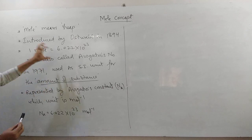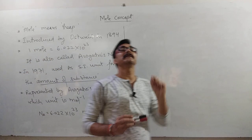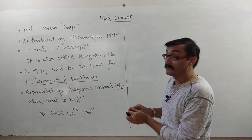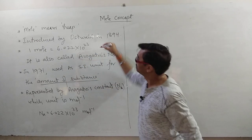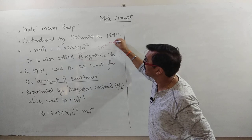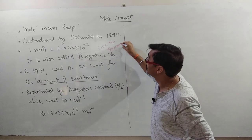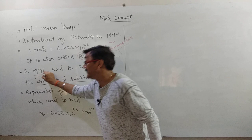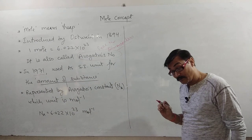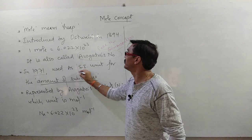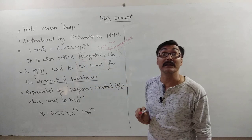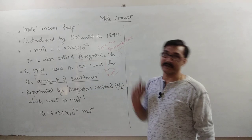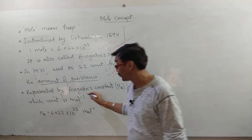It is just a number like a dozen — a very large number. Avogadro's number is a pure number, meaning it is dimensionless. In 1971, it was first approved as an SI unit. The SI unit for amount of substance is the mole, and it is also represented by Avogadro's constant.